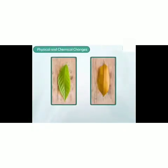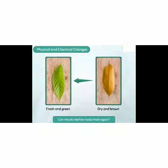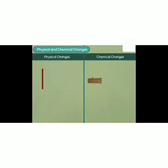You might have seen a fresh green leaf and a dried brown leaf around you. Can you convert a dried brown leaf to a fresh green leaf again? No, it is not possible because it is a chemical change — a new substance is formed. There are two types of changes: physical changes and chemical changes.